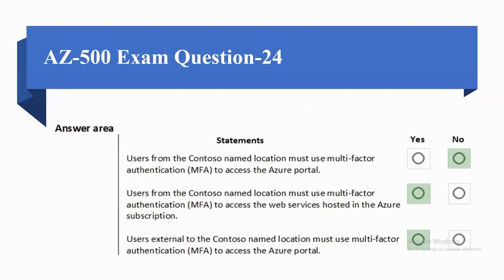The first statement is false. The second and third statements are true. Statement B says users from the Contoso named location must use MFA to access web services hosted in the Azure subscription. The third statement is also true: users external to the Contoso named location must use MFA to access the Azure portal.